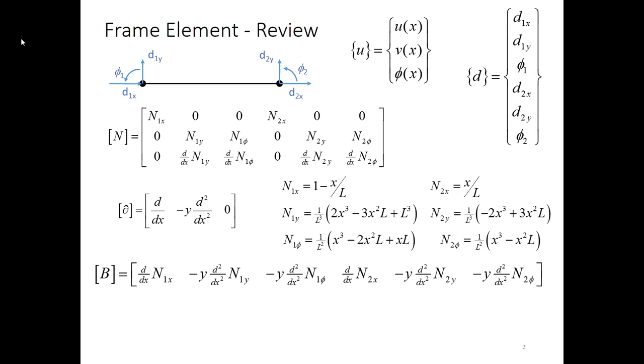In addition, we developed the partial derivative matrix operator for the frame element. It has three terms: d by dx, corresponding to the strain that's produced by an overall axial displacement, and then a minus y d2dx squared, which is the axial strain that's produced by bending transverse displacement. And then lastly, a zero term because the slope is not directly contributing to the strain in the axial direction.